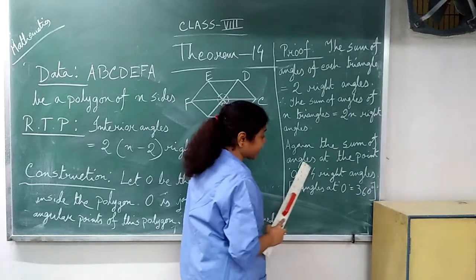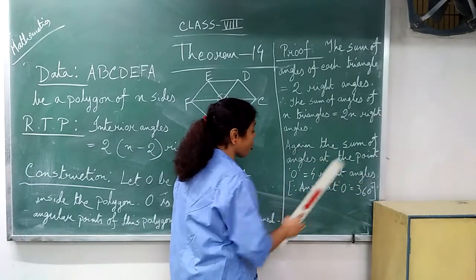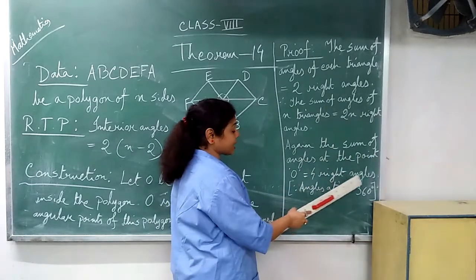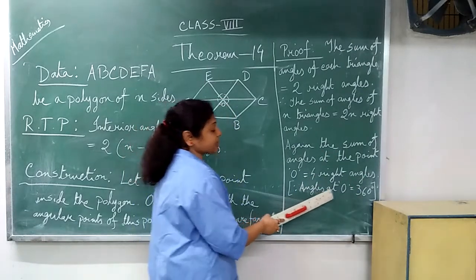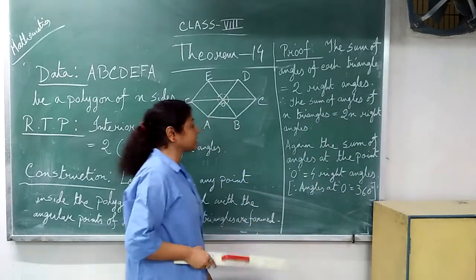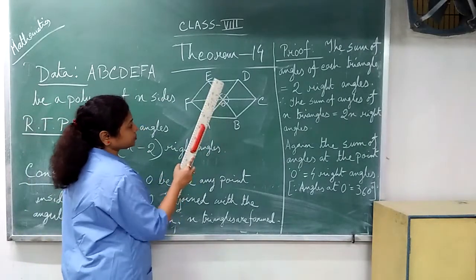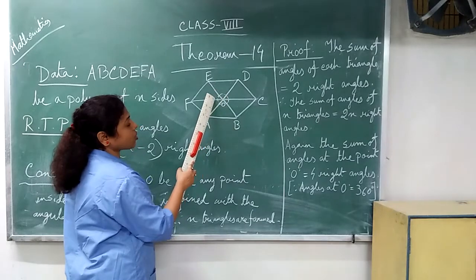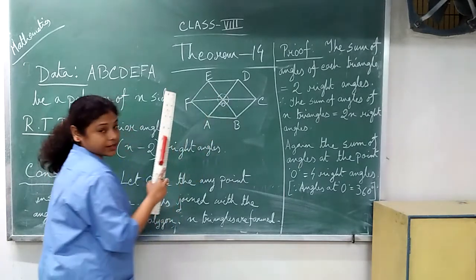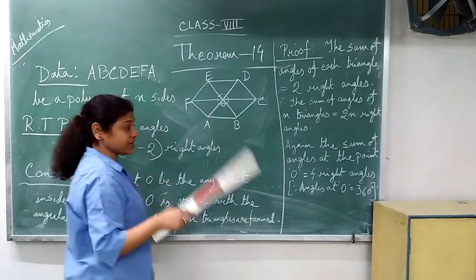Again, the sum of angles at a point is equal to 4 right angles, since angles at a point equal 360 degrees. You see the diagram. This is point O and all the angles around this point, that is 360 degrees, which means 4 right angles.